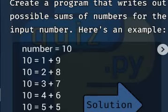We have a simple program in Python that writes out possible sums of numbers for the input number. If your input is 10, then how can you form the 10? 1 plus 9, 2 plus 8, 3 plus 7, 4 plus 6, and 5 plus 5.